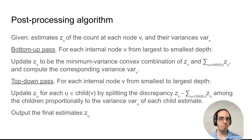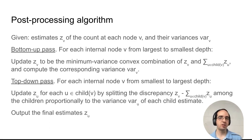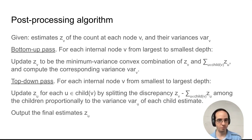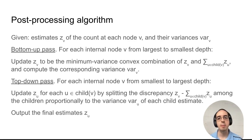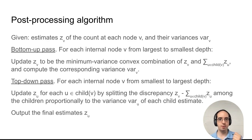We're first going to do a bottom-up pass from the bottom of the tree up to the top. For each node, we're going to look at the estimate of that node and the sum of the recursively computed estimates of its children. And we're going to take the optimal convex combination of those two estimates, computing this new estimate of the value of the node and its variance, doing this from the bottom of the tree all the way up to the root.